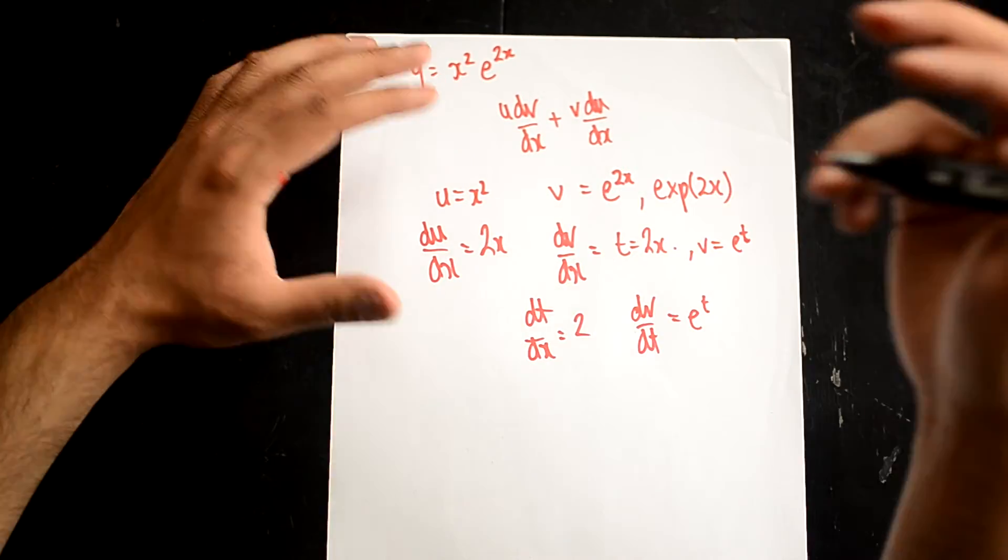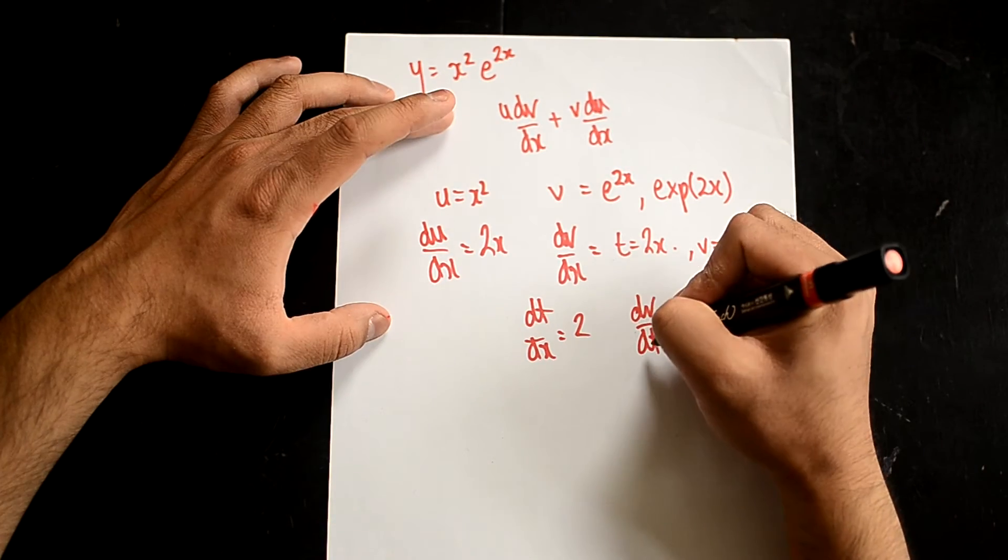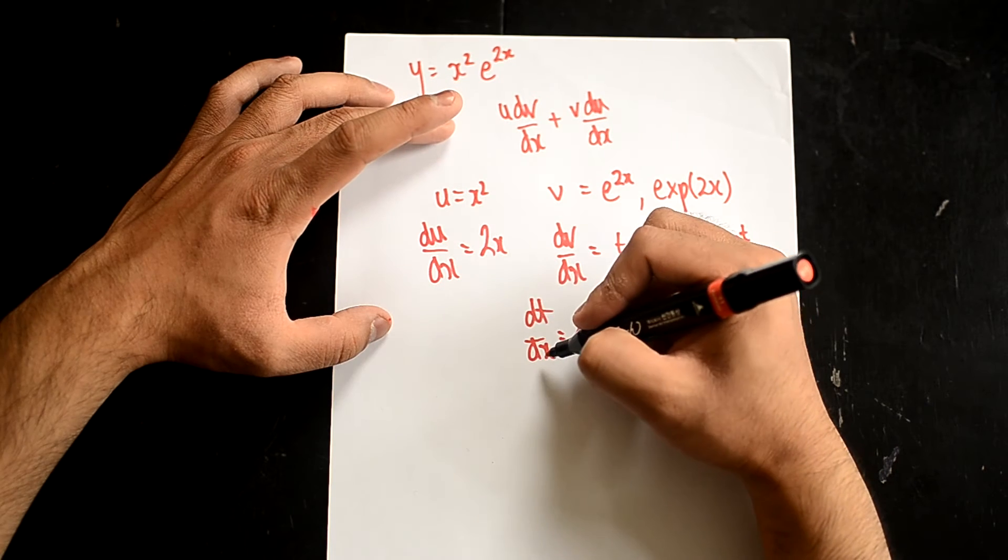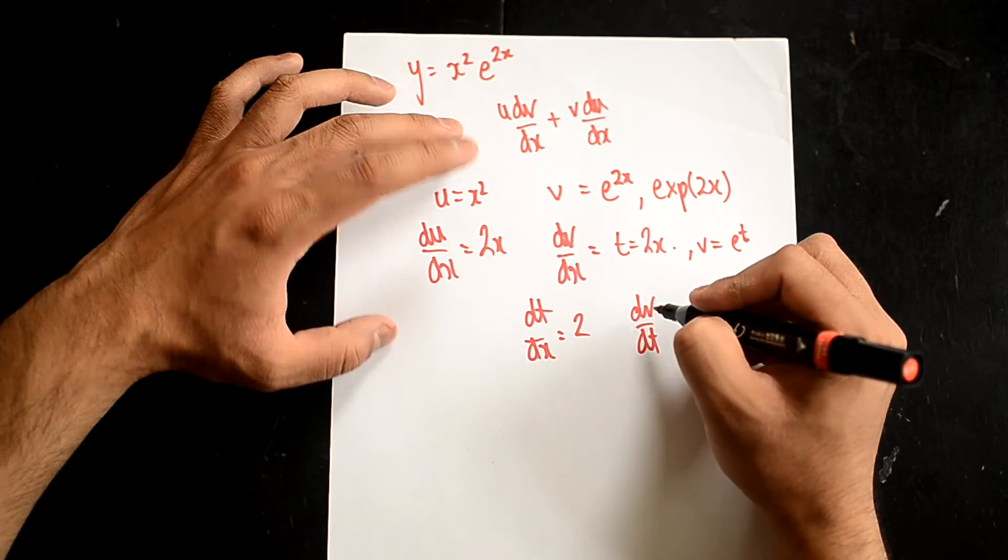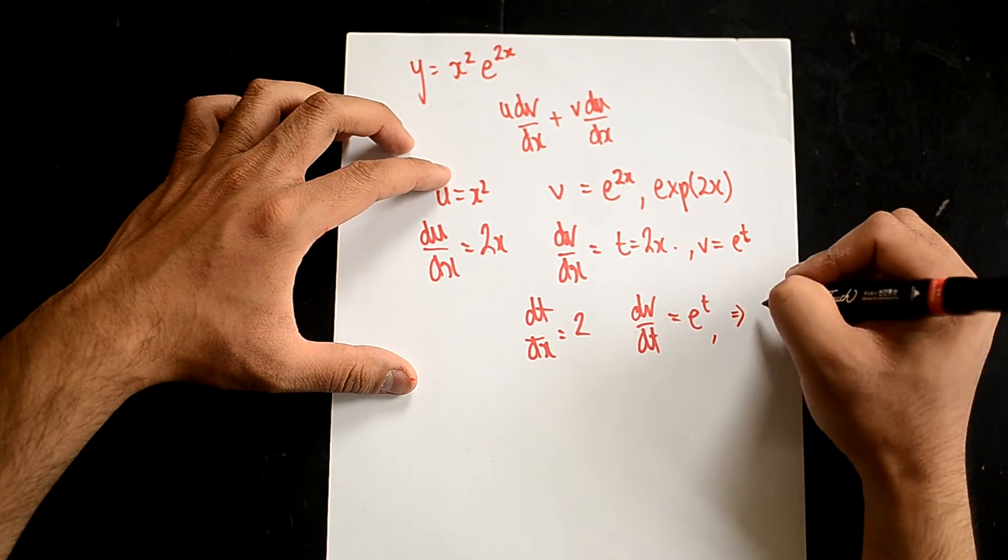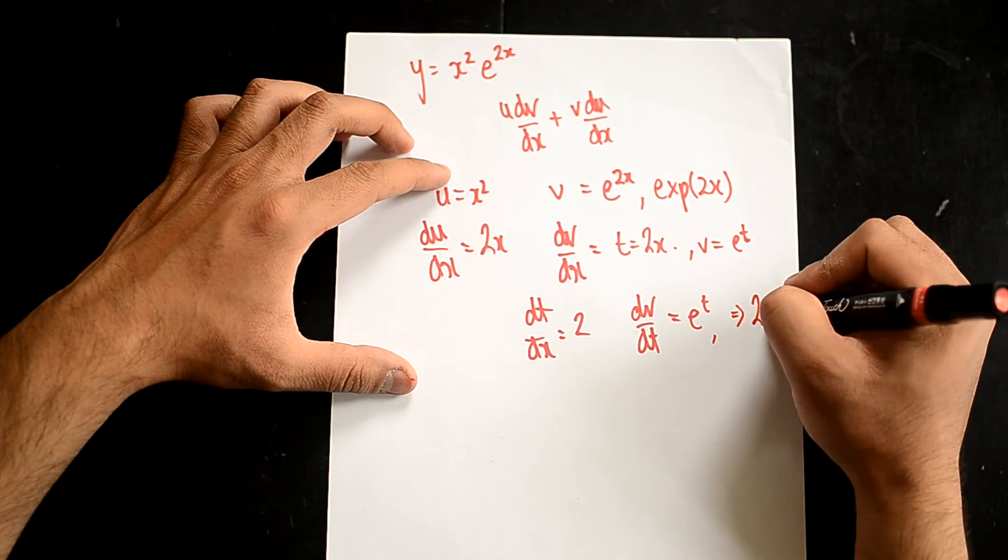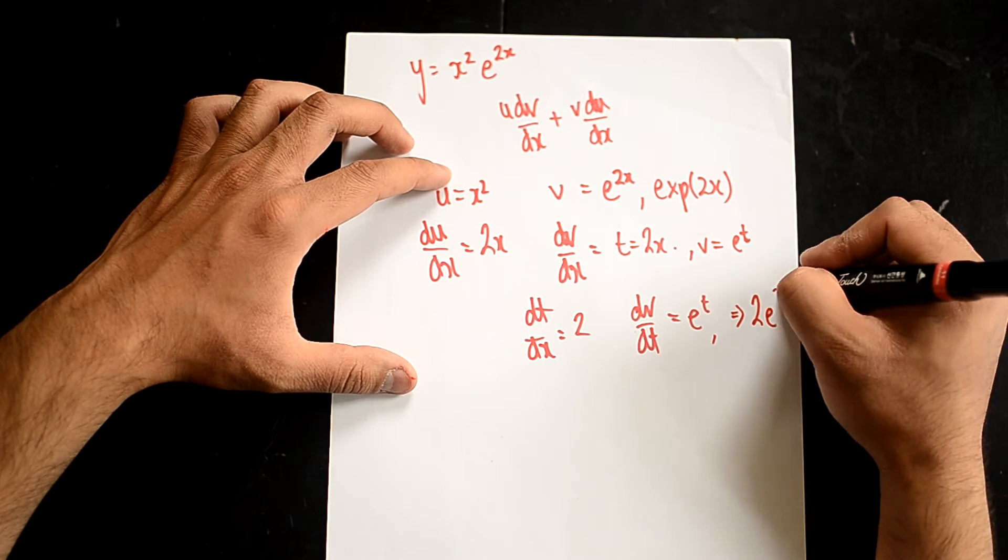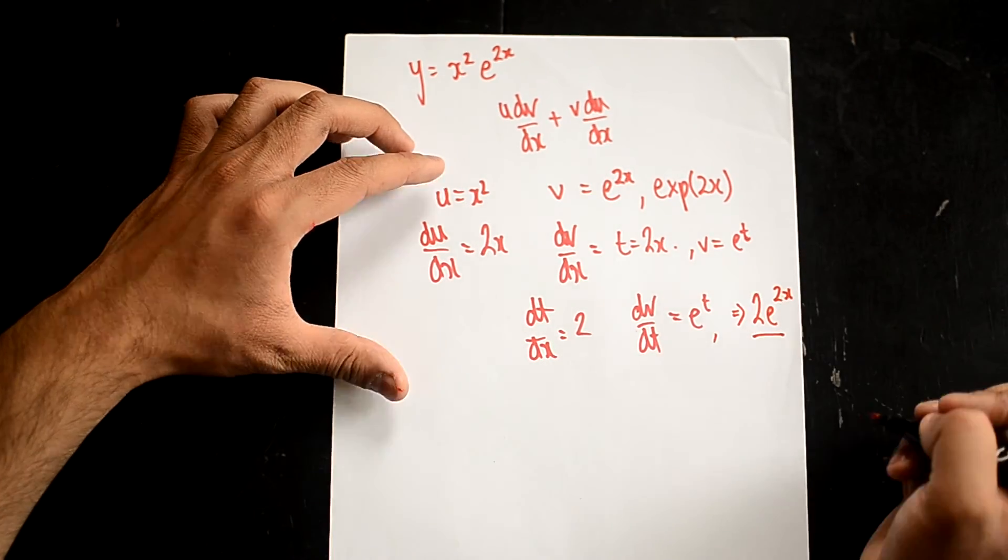So, now, dv/dt equals this. I will then do dv by dt times by dt by dx, because then my dt's will cancel out and I'll get dv by dx. Which would be 2 multiplied by this, which is e, substitute t back in, 2x. That is dv/dx.